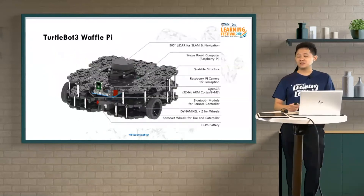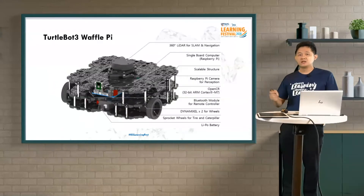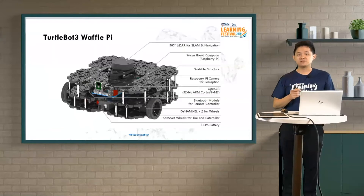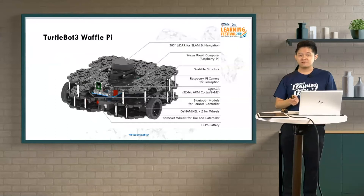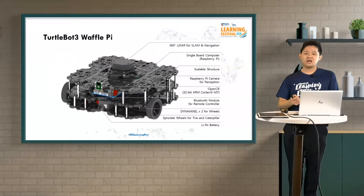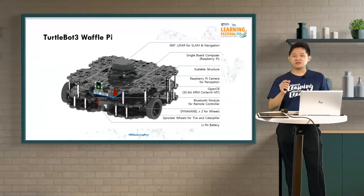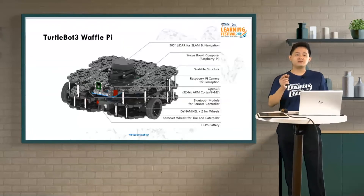On top of the TurtleBot 3 Wafer Pie, we have the LIDAR sensor in the center, and a Raspberry Pi camera in front. The two other main components are: the OpenCR controller, which helps control the motors; and a Raspberry Pi computer embedded within the TurtleBot 3 itself.